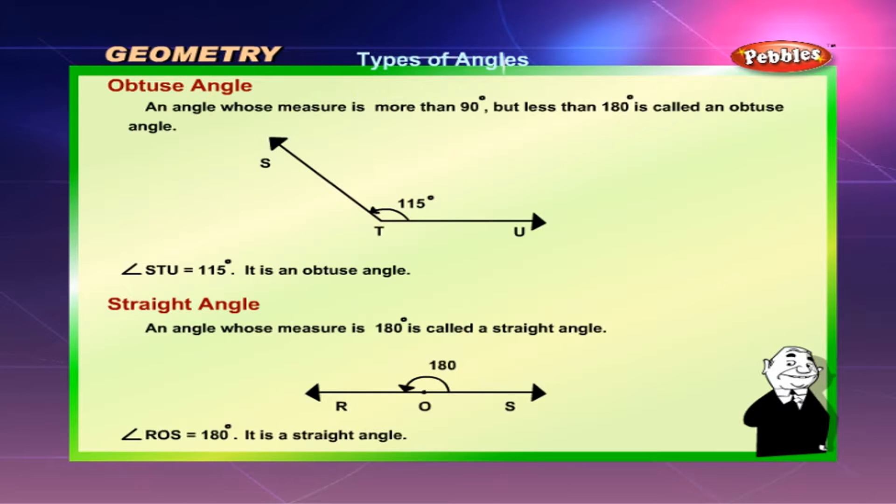Straight angle. An angle whose measure is 180 degrees is called a straight angle. Angle ROS is equal to 180 degrees. It is a straight angle.